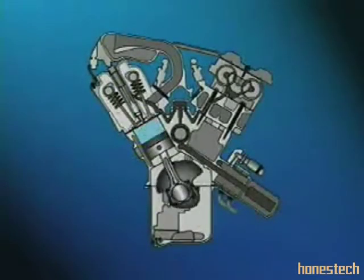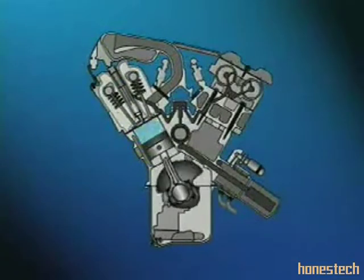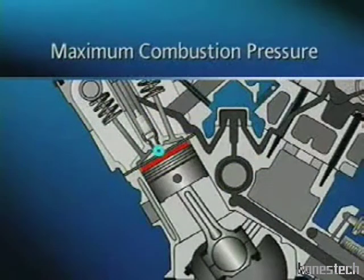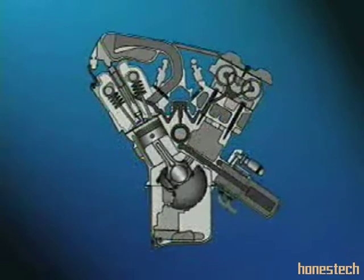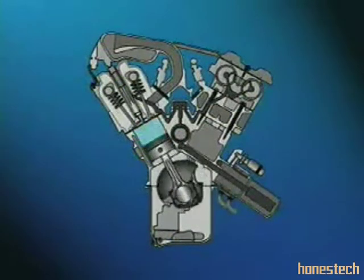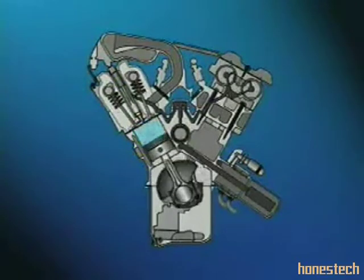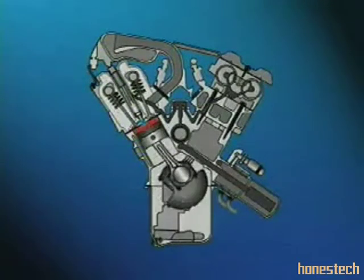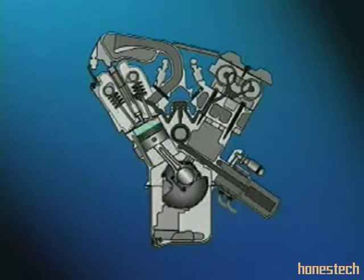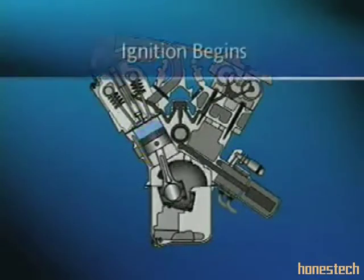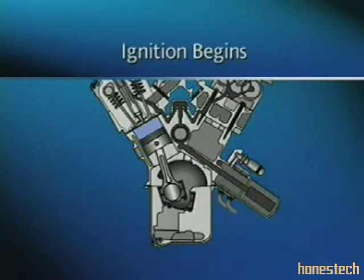There are several factors that affect when the spark is delivered to the combustion chamber. In order to produce the greatest combustion pressure, the piston should be slightly past top dead center on the power stroke. Because the engine is rotating and the combustion process takes time — and time translates to degrees of crankshaft rotation — the air-fuel mixture must start to burn before the piston reaches the optimum position. Typically, the combustion process begins before the piston reaches top dead center of the compression stroke.